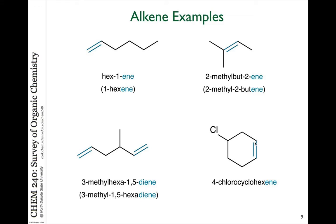When we name alkenes, what we do is we take the -ane ending of an alkane for the longest hydrocarbon chain that we have, and replace that with -ene to indicate the presence of a double bond. So in this case, if we have the molecule shown on the top, this is a six carbon chain — one, two, three, four, five, six. So this is a hexene molecule.